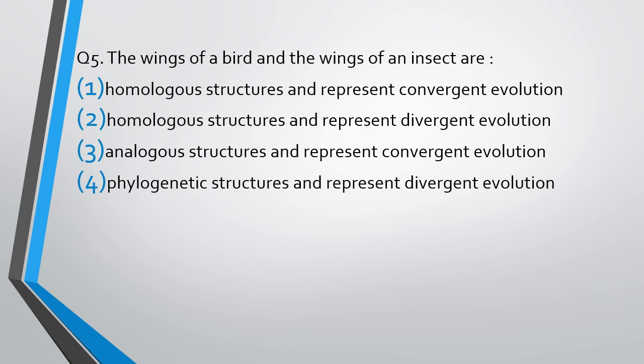Question number 5. The wings of bird and wings of an insect are: homologous structures and represent convergent evolution, homologous structures and represent a divergent evolution, analogous structures and represent a convergent evolution, or phylogenetic structures and represent a divergent evolution.